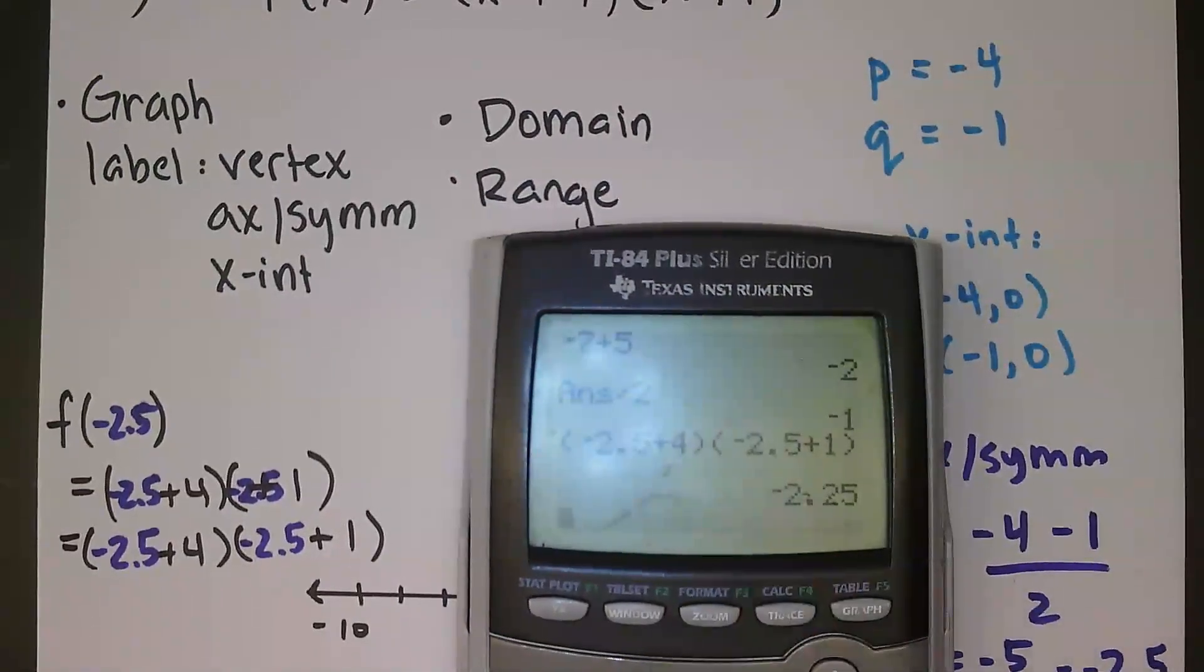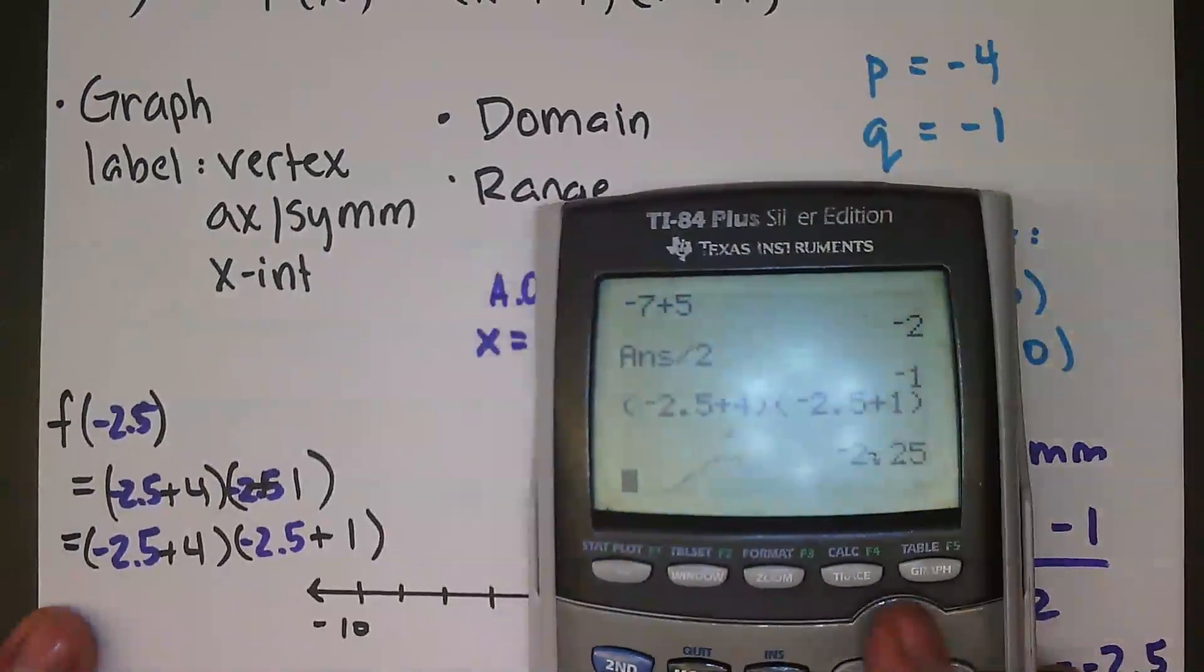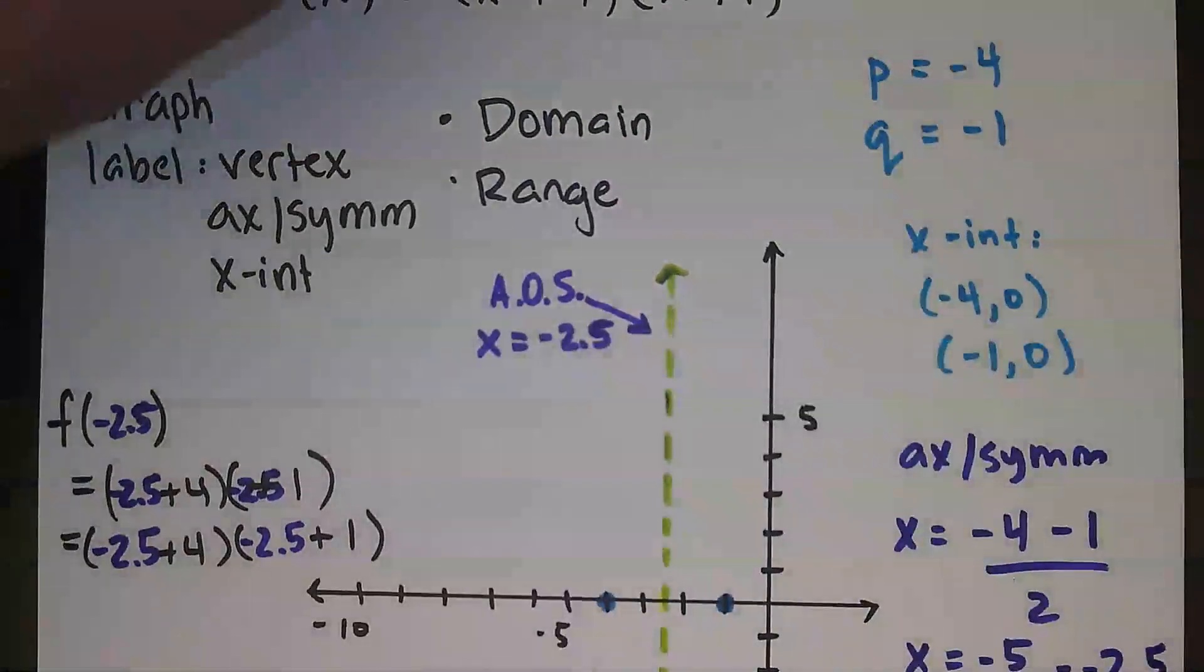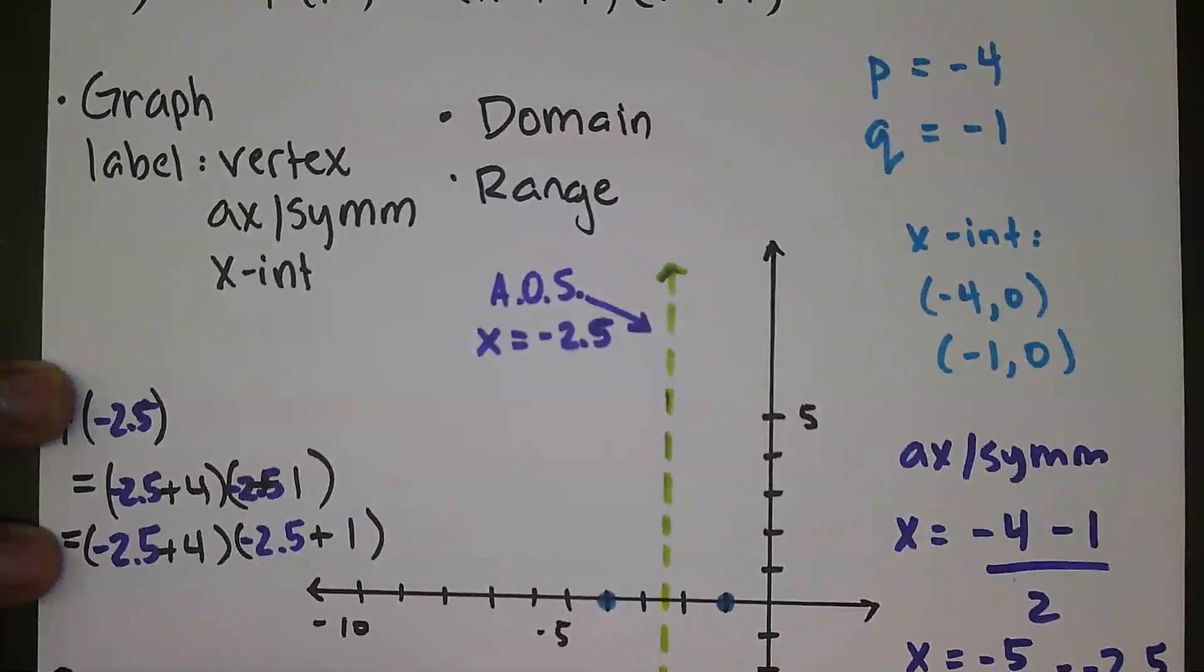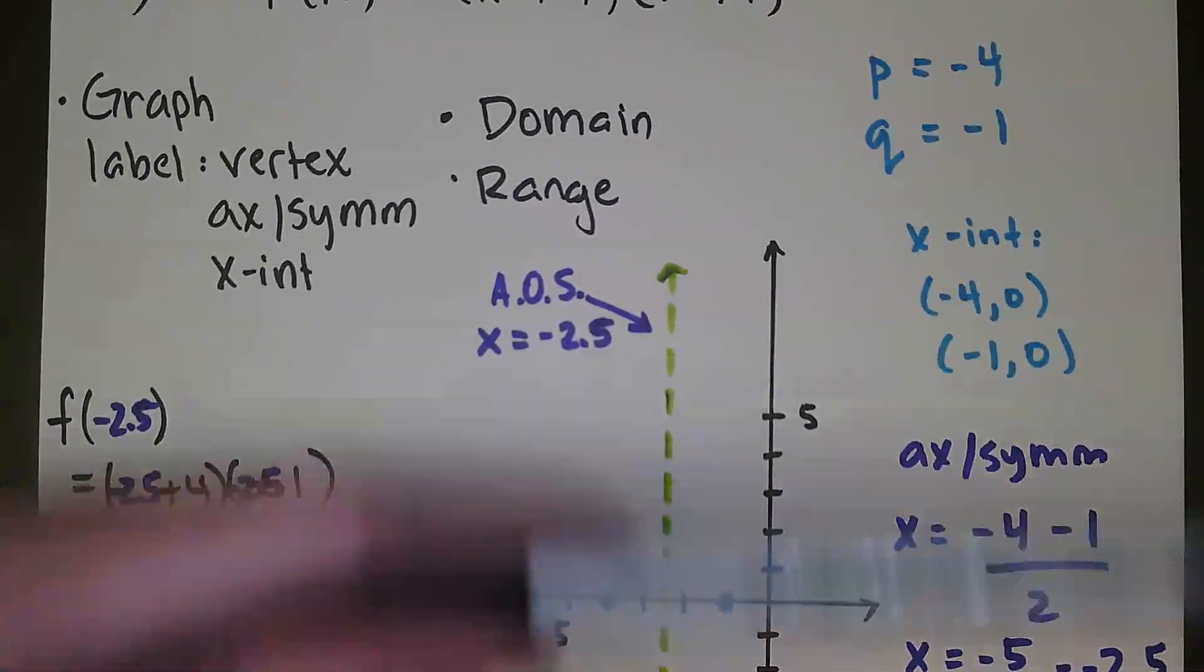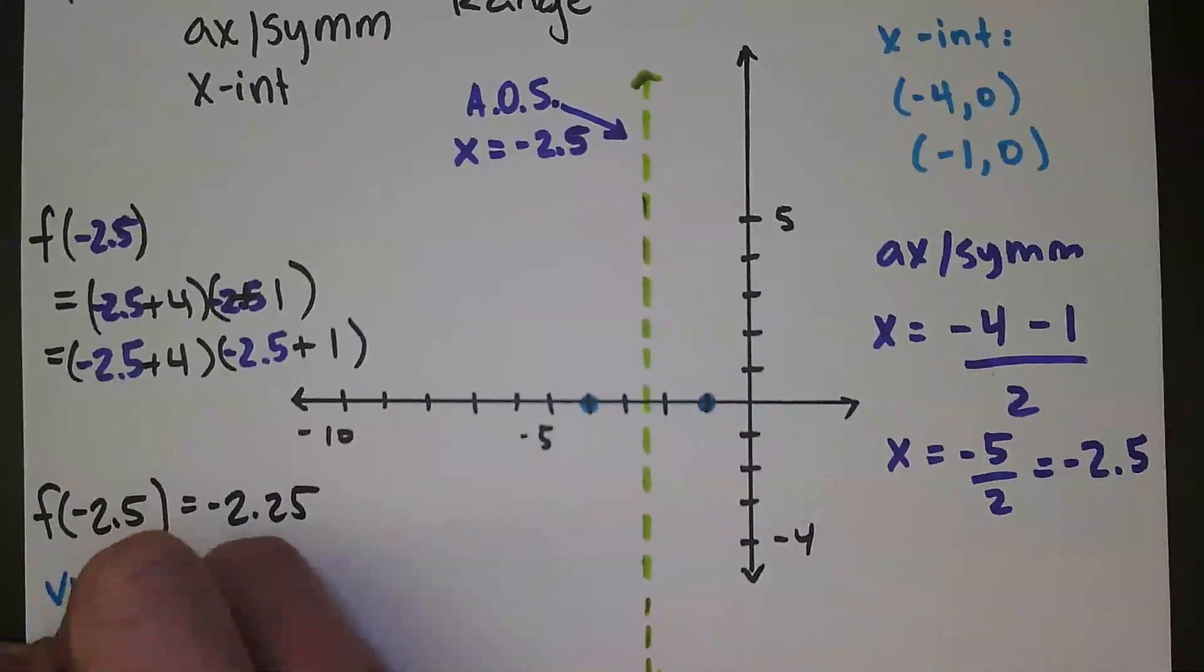And we're going to get negative 2.25. And I know a lot of times people don't like the fact that we're getting decimals and fractions, but decimals and fractions do not necessarily mean wrong answers. So that is indeed correct. F of negative 2.5 is equal to negative 2.25. So that's the x and y pair that is going to make the vertex.